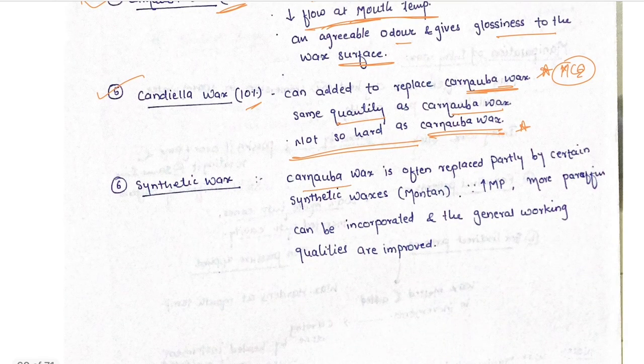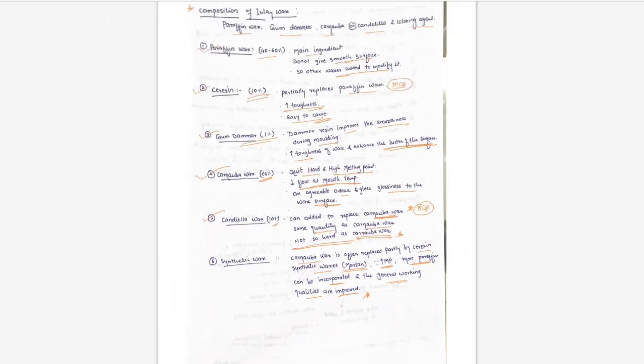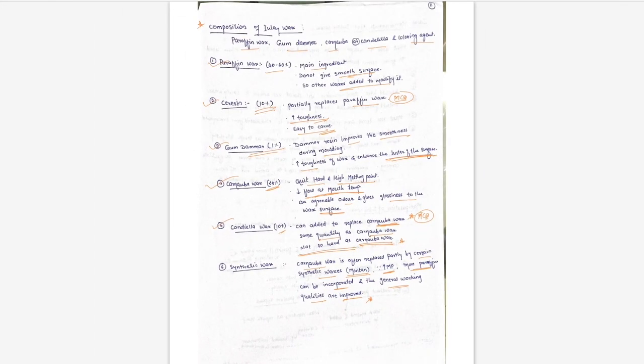Synthetic wax: carnauba wax is often replaced partly by certain synthetic waxes, which increases the melting point. More paraffin can be incorporated and the general working qualities are improved.